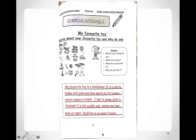Here is an example of what your paragraph can look like. Question one — What's your favorite toy? My favorite toy is a teddy bear. Question two — What is its color? It is a white teddy with pink and blue spots on its tummy. Question three — What do you do with it? I like to sleep with it because it is fat, cuddly, and makes me feel safe at night. Question four — Why do you like it? Stuffins is my best friend. Stuffins is the name of the teddy bear. You can answer the questions however you like — be really creative! Please go back to the PowerPoint and complete the assessment so I can see how much you understood from today's lesson.